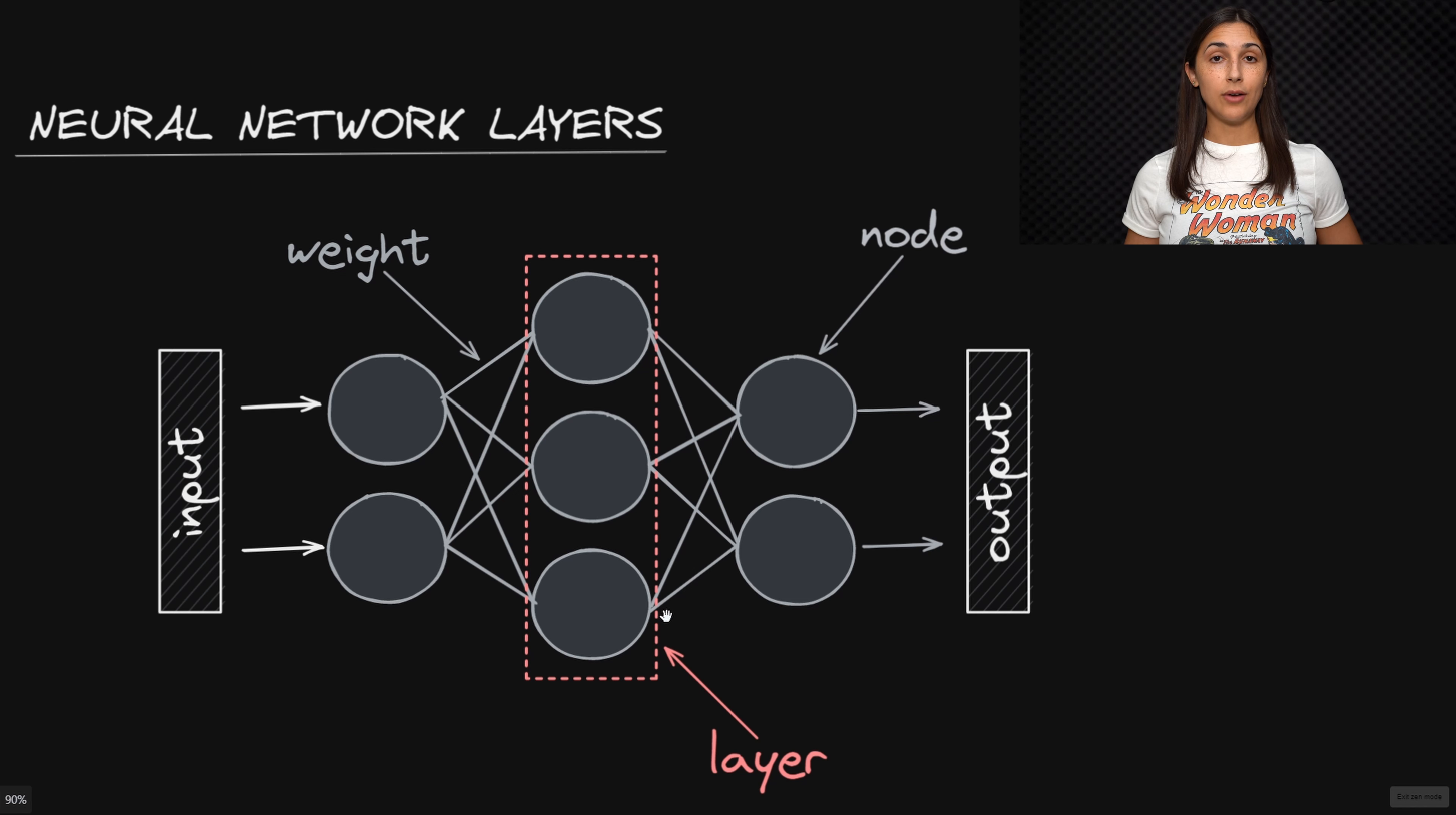For example, the convolutional layers we referred to earlier are some of the most common types of layers that we include in networks processing image data.